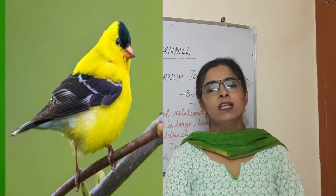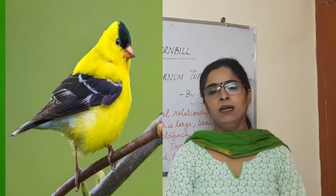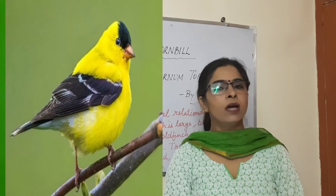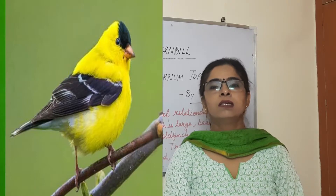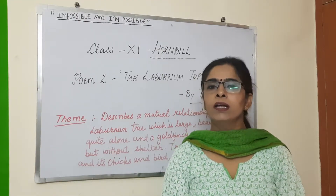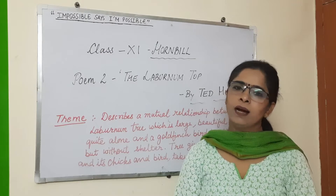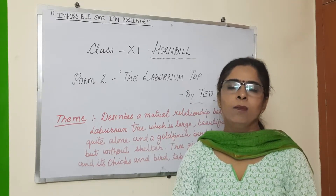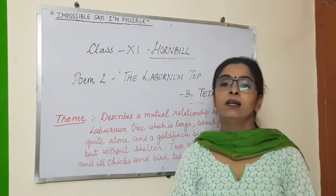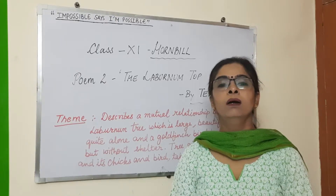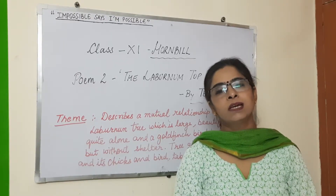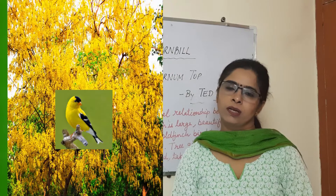The goldfinch is a very small and beautiful bird, and it is also yellow in color. So you can see the similarity between the two — both have yellow shades. It is a tiny bird, very beautiful, and it needs to be sheltered. So it needs a tree for its nest.